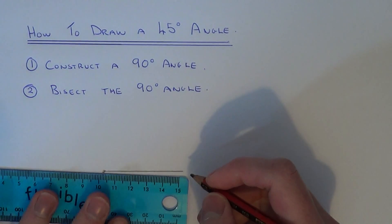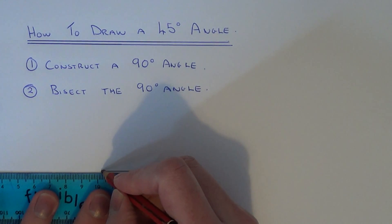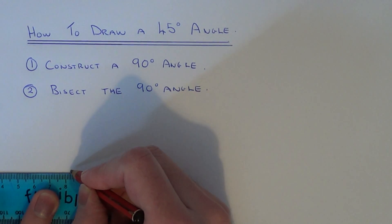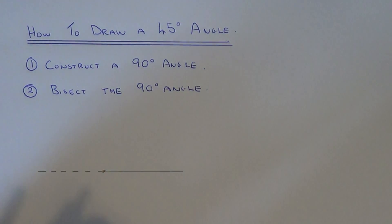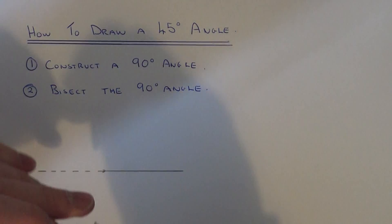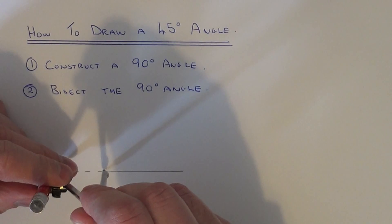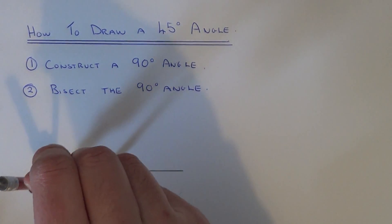You can do this by extending the line out to the left-hand side. Get your compass and do two arcs which cross the line.